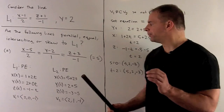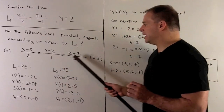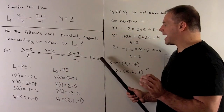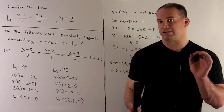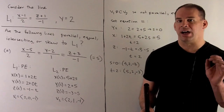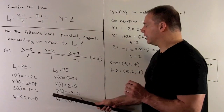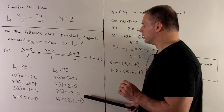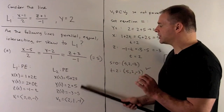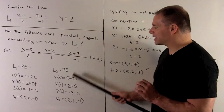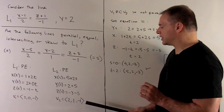For the second line, we use the same approach, setting each expression equal to s — a different variable since we're already using t. We isolate x, y, and z to get the three parametric equations. Peeling the coefficients off of s gives the direction of this line as the vector v2 = (2, 1, -1).